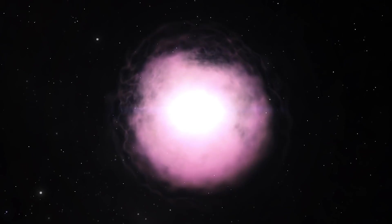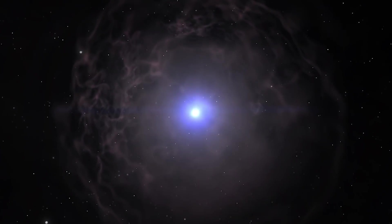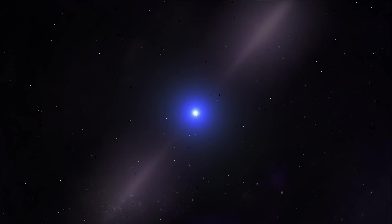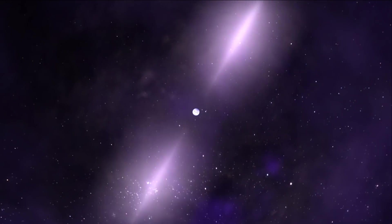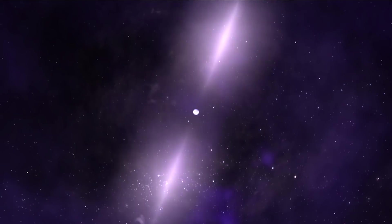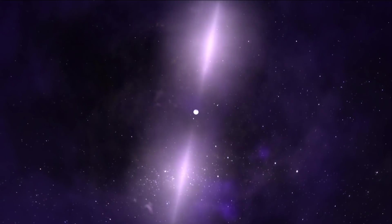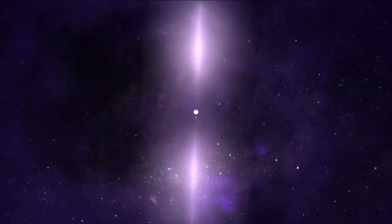A neutron star is the crushed core of a massive star that exploded in a supernova. Pulsars, like J0030, are rapidly spinning neutron stars that sweep beams of energy across our line of sight, much like a lighthouse.